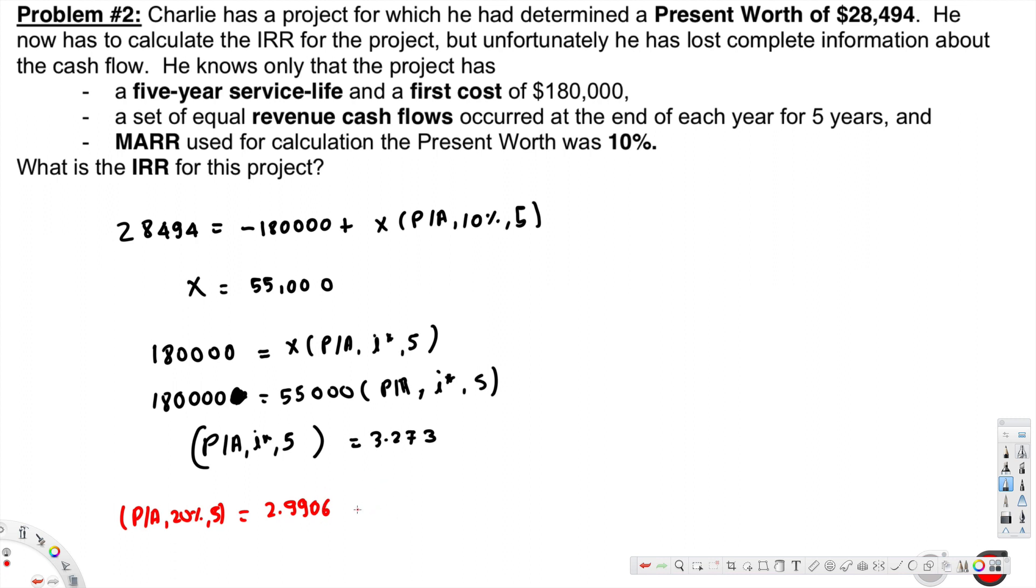And (P/A,15%,5) is equivalent to 3.3522. Now we have to do linear interpolation.